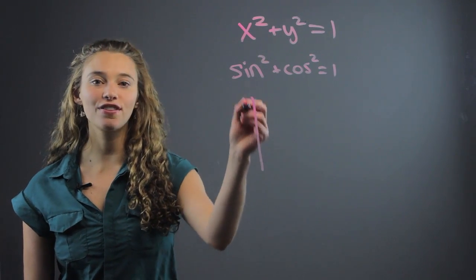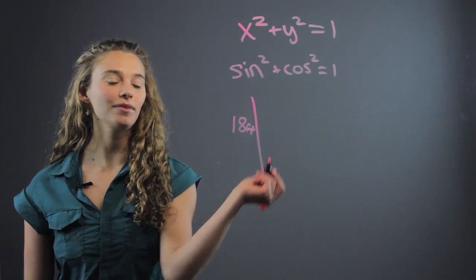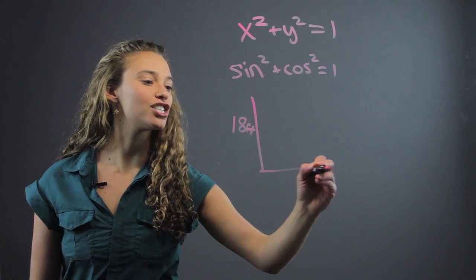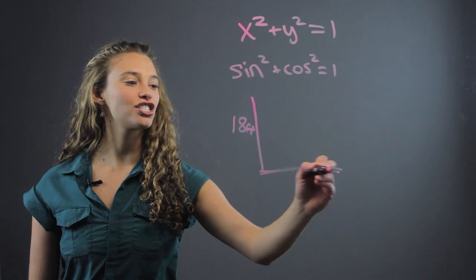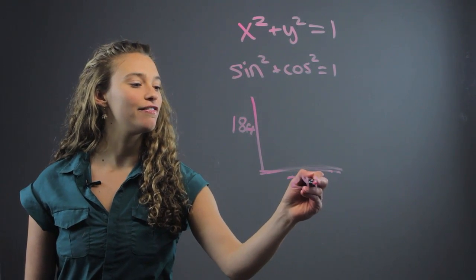So let's say that this flagpole is 18 feet tall, and let's say that it casts a shadow. There's a shadow of the flagpole, which let's say is 24 feet long.